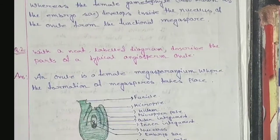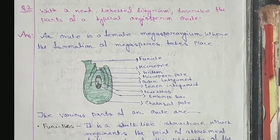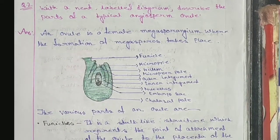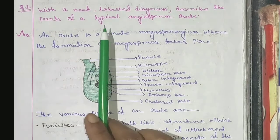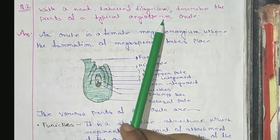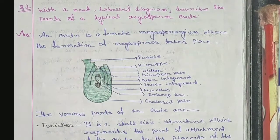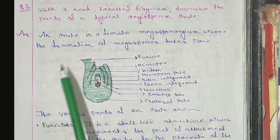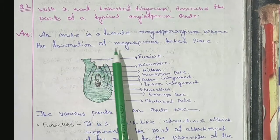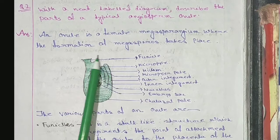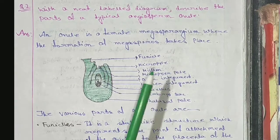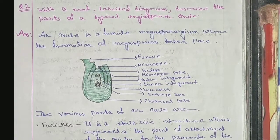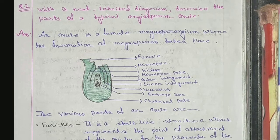The second question is: with a neat labelled diagram, describe the parts of a typical angiosperm ovule. An ovule is a female megasporangium where the formation of megaspores takes place — that means megaspores develop inside the ovule.